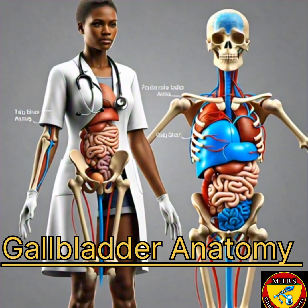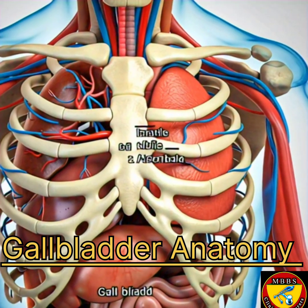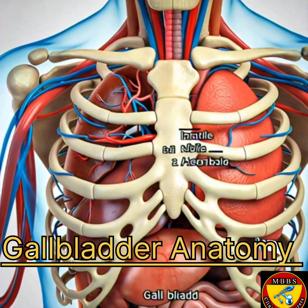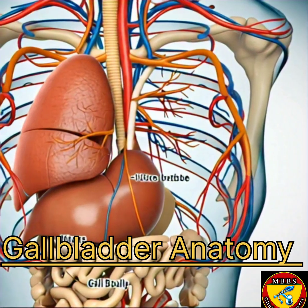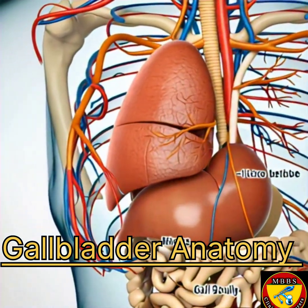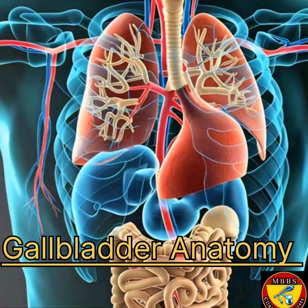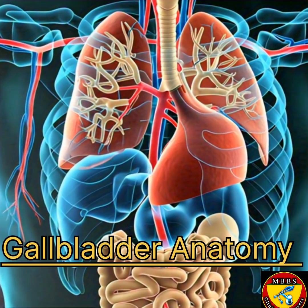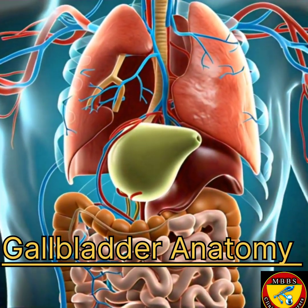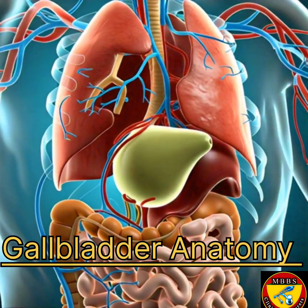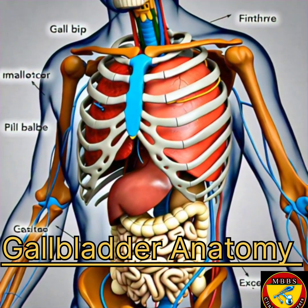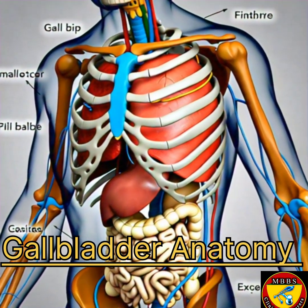The gallbladder consists of three main parts: the fundus, the rounded blind end of the gallbladder that points towards the abdominal wall; the body, the main part of the gallbladder which stores bile; and the neck, the narrow tapered part that connects the body to the cystic duct.